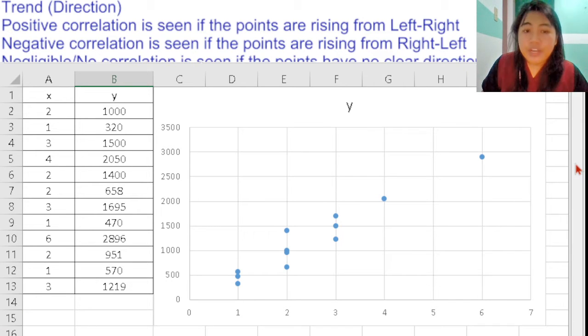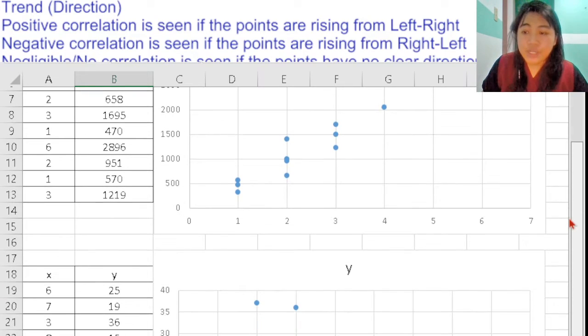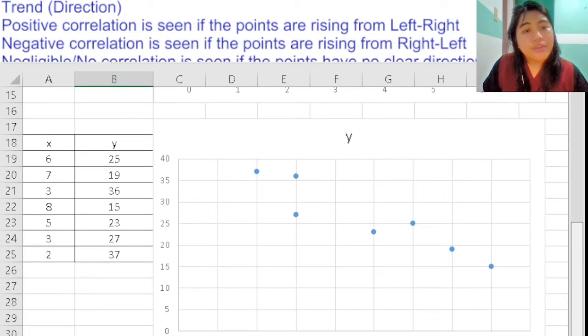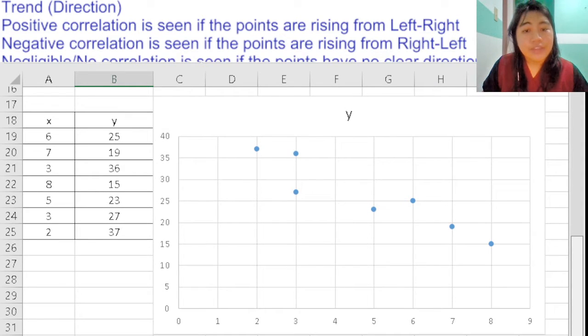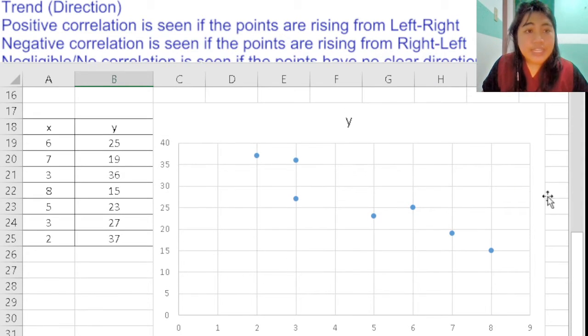If you can see a rise of the points going from right to left, then there is negative correlation in the data shown, meaning that as x rises, y decreases, or vice versa.